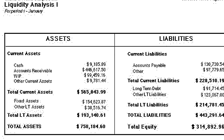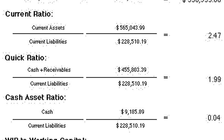The first set of ratios is liquidity ratios. These ratios help the analyst understand how liquid the company is — how quickly they can turn their current assets into cash. The three main ratios within the liquidity ratios are: one, current ratio; two, quick ratio; and three, cash ratio.